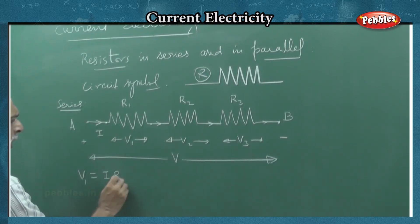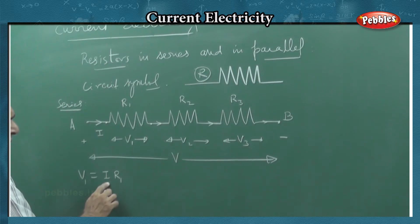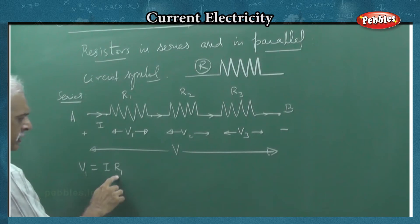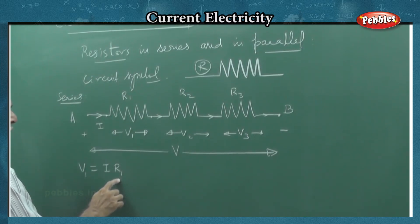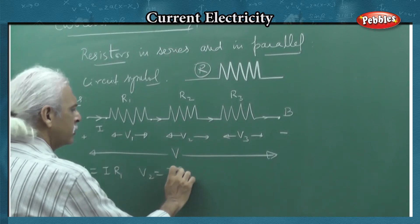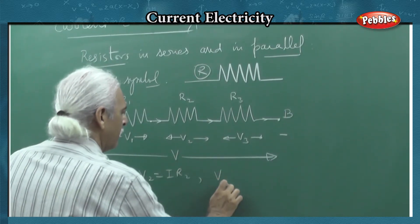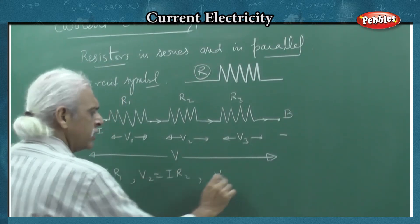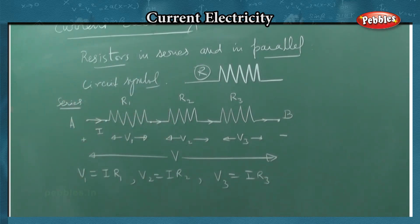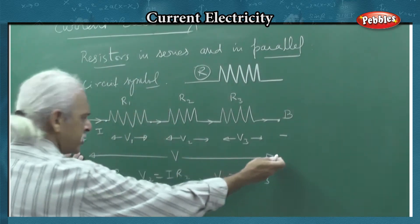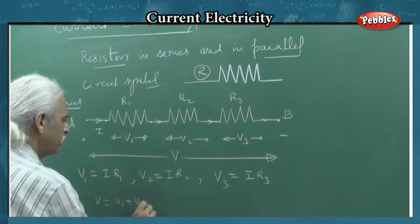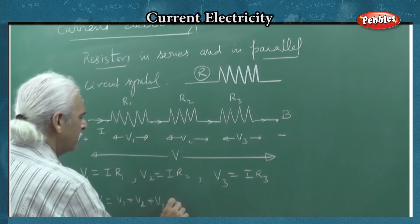Now, V1 is different from V2, different from V3 because the values of resistors are different. So V1 is IR1, V2 is IR2, V3 is IR3. Therefore, the total potential V is equal to V1 plus V2 plus V3.